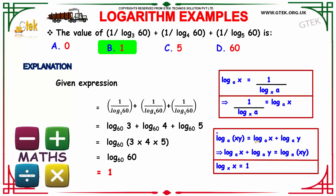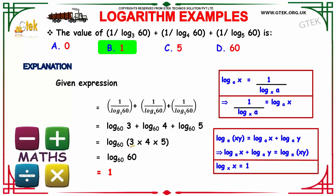Again, using the property that log xy to the base a is equal to log x to the base a plus log y to the base a, we can write the right-hand side as log (3 × 4 × 5) to the base 60. Since 3 × 4 × 5 equals 60, this becomes log 60 to the base 60, which equals 1.